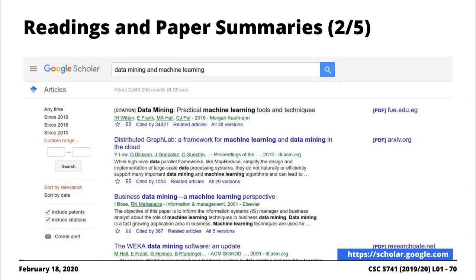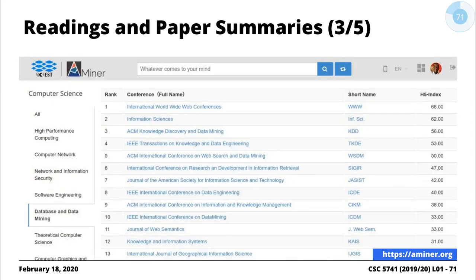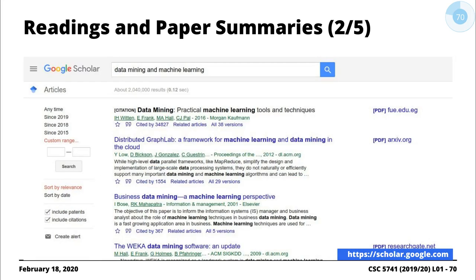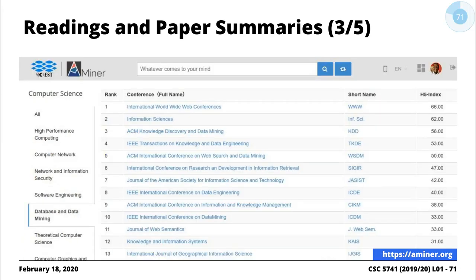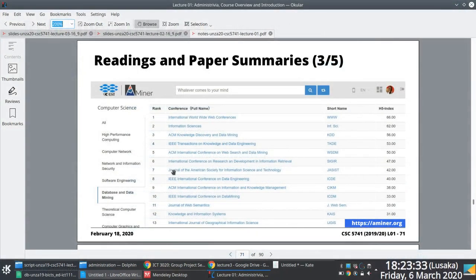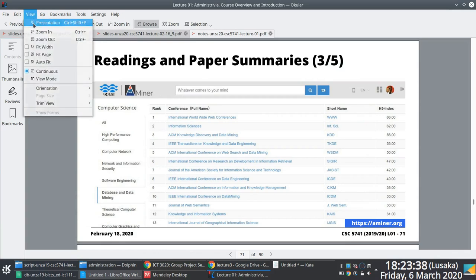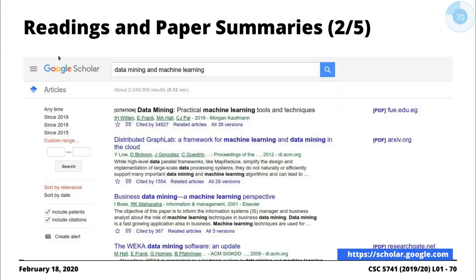The number of citations matters. Or if you're searching for a publication venue, there's an H-index. If you search a journal like Zambia ICT Journal, it will give you a number called the H-index, which is a relative measure of how good a venue is.